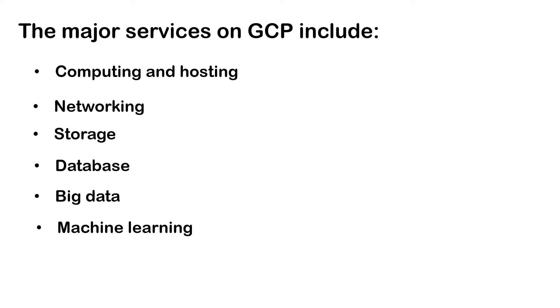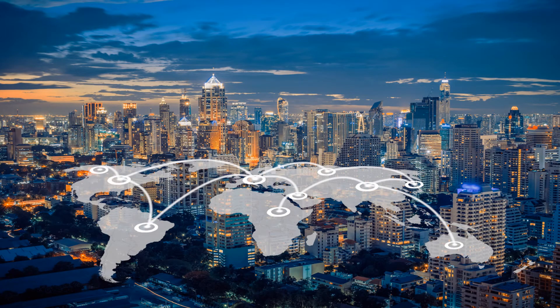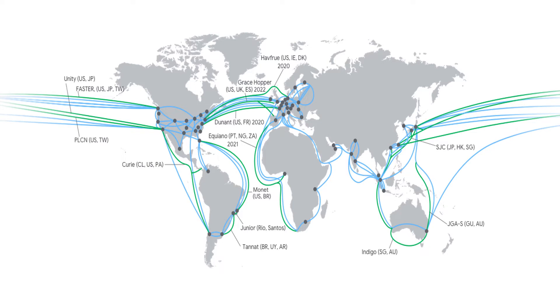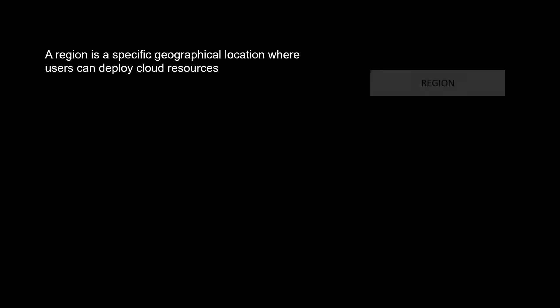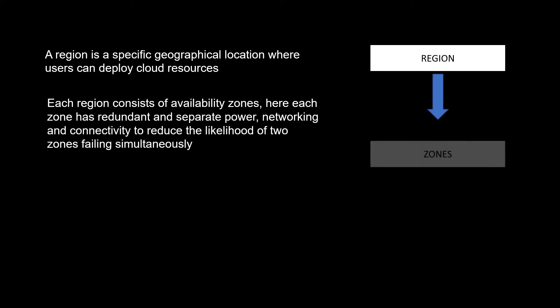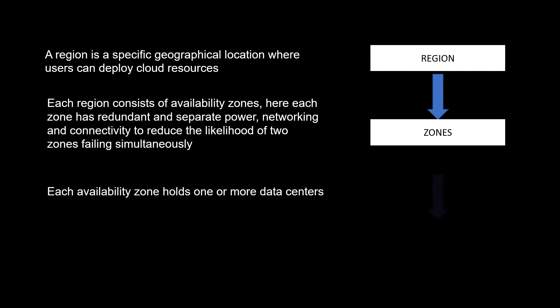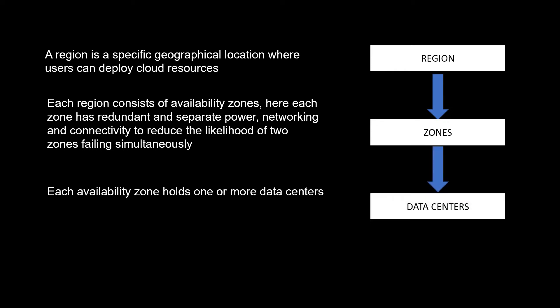GCP offers services for 24 regions with 73 availability zones in over 200 countries. A region is a specific geographical location where users can deploy cloud resources, and each region consists of availability zones, where each zone has redundant and separate power, networking, and connectivity to reduce the likelihood of two zones failing simultaneously.